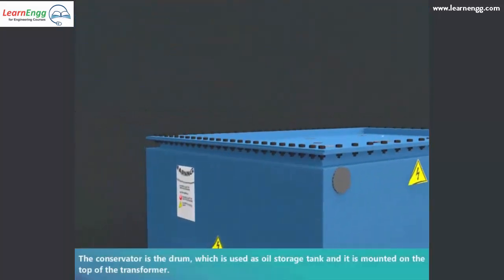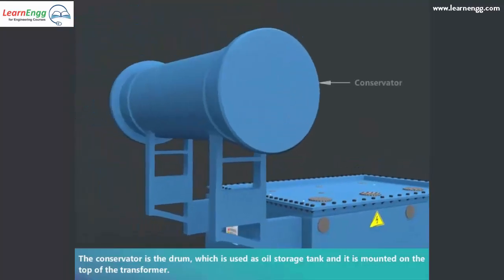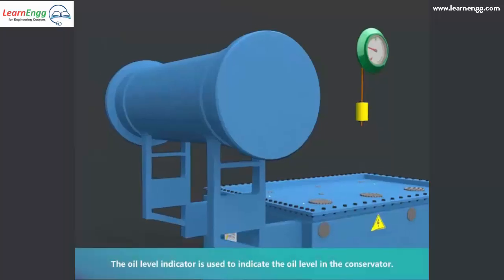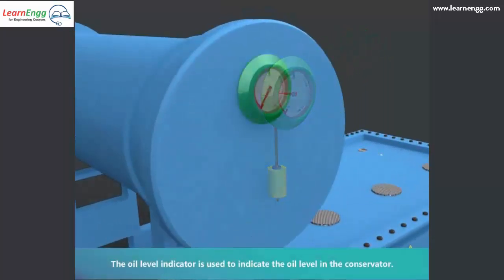The conservator is the drum which is used as oil storage tank and it is mounted on the top of the transformer. The oil level indicator is used to indicate the oil level in the conservator.